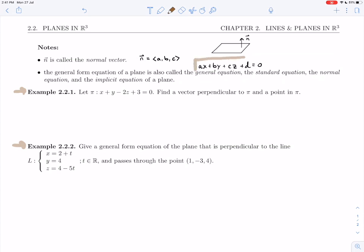The general equation of a plane in R³ is ax plus by plus cz plus d equals 0. The a, b, c can be interpreted as the components of a vector n, which is called the normal vector, and that is a vector perpendicular to the plane.